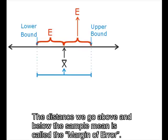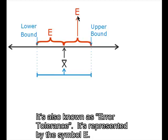The distance we go above and below the sample mean is called the margin of error. It's also known as error tolerance and is represented by the symbol E.